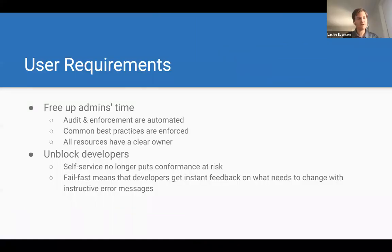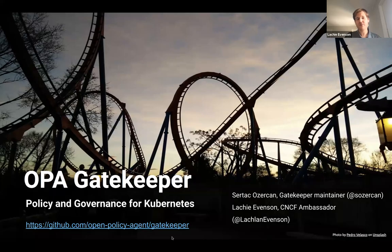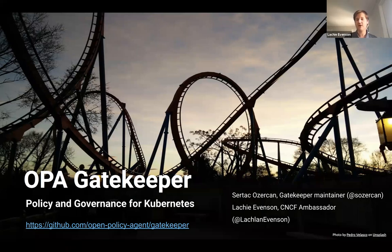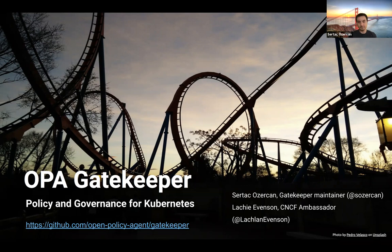Before going into user requirements, let's take a few live questions. First: will demo code samples be made available? Absolutely — go to the Gatekeeper repository on GitHub at open-policy-agent/gatekeeper. There is a directory called demo, and inside that is a script. Under demo/agile-bank there's a script called demo.sh — run it and you'll get the whole demo experience. The recording will also be available.